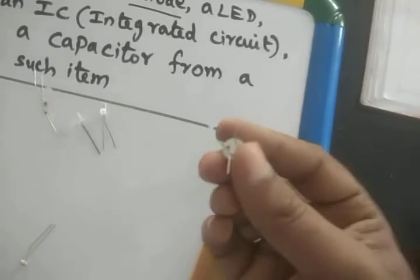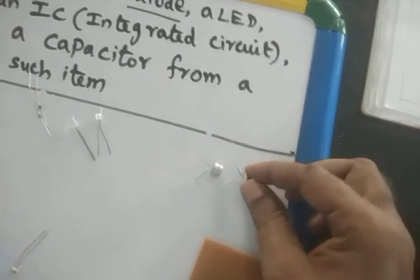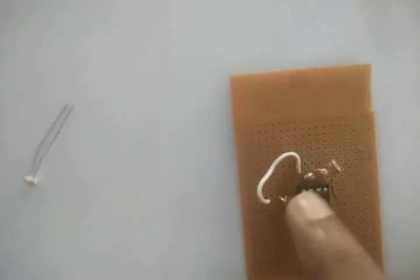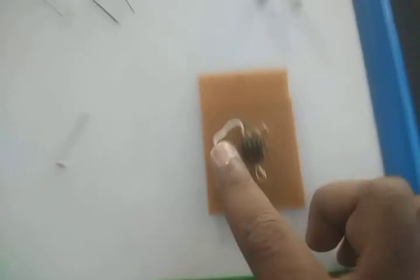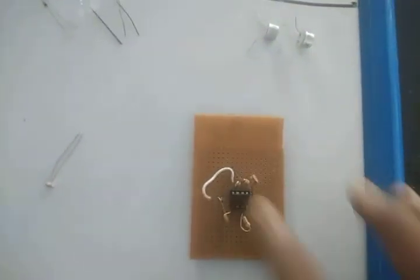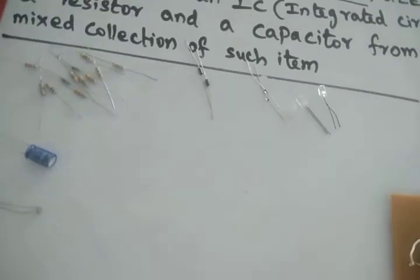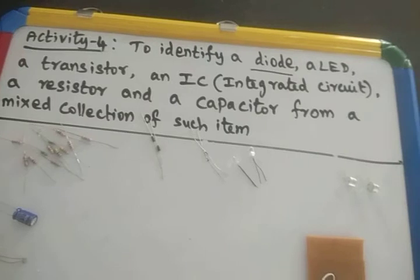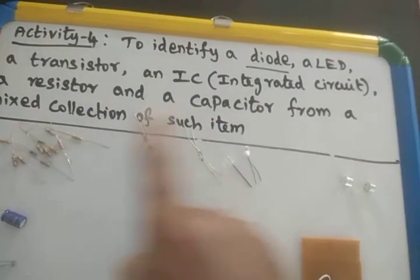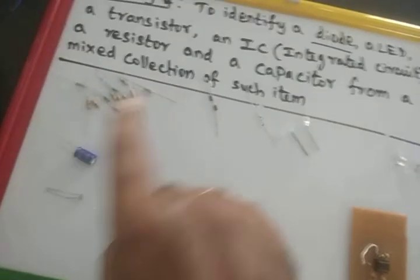The transistor has three legs — this is an NPN transistor. The IC chip has more than three legs: one, two, three, four, five, six, seven, eight — eight legs. This is the IC integrated circuit. The LDR also has two legs. LDR is an extra component not included in the practical activity, but it is easy to identify the diode, LED, transistor, IC, resistor, and capacitor with unique identification.